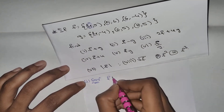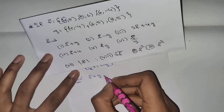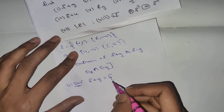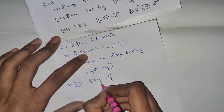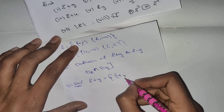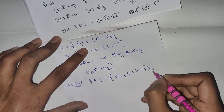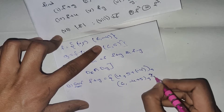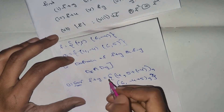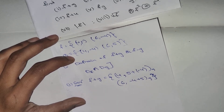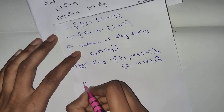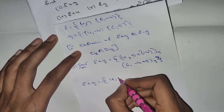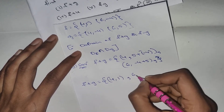First solution: F plus G. We will solve the problem. I will solve the problem. Second solution. What do you have to do? 6 minus 4 plus 5. F plus G equals to (4, 5 plus (−4)), so 5 minus 4 is 1 plus 1. 6, 1.